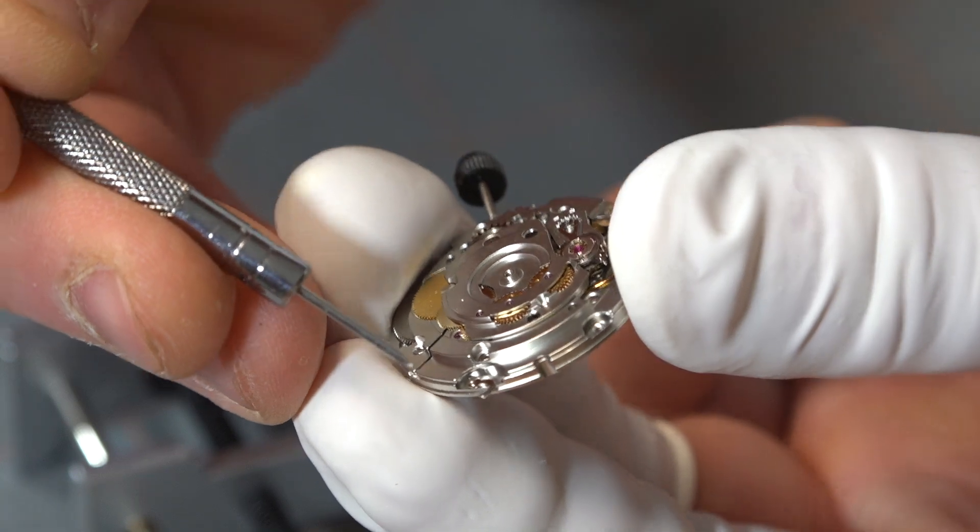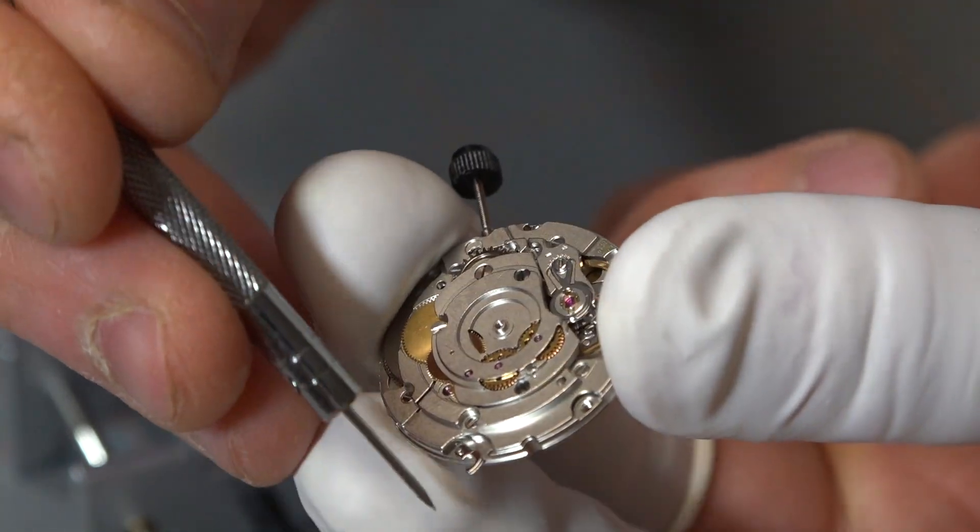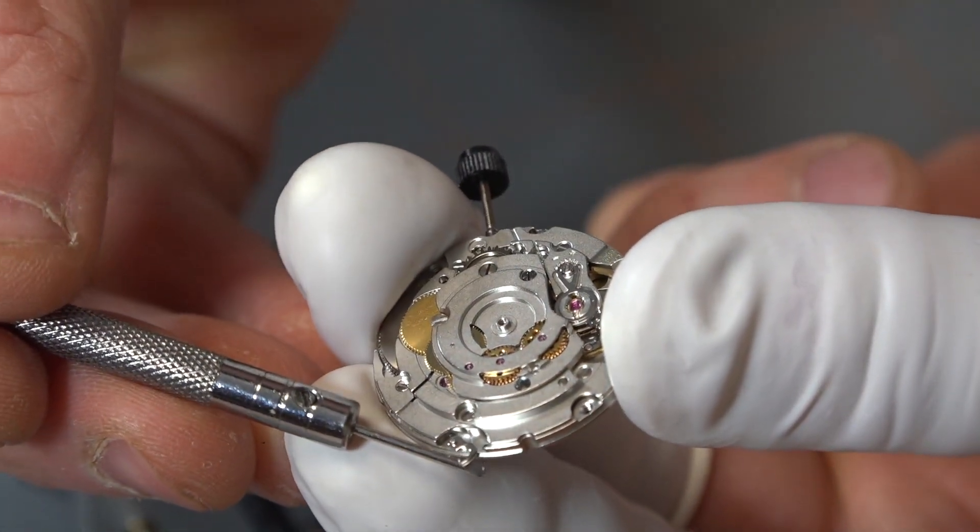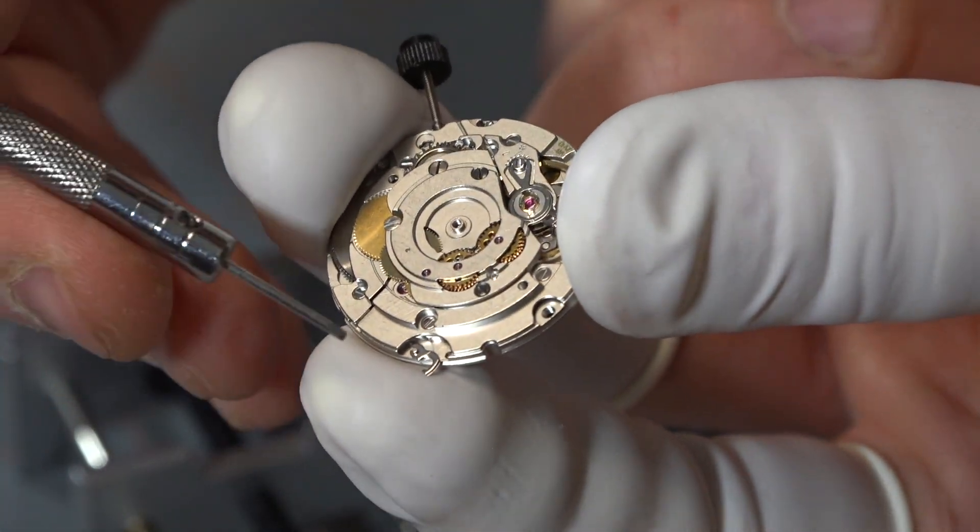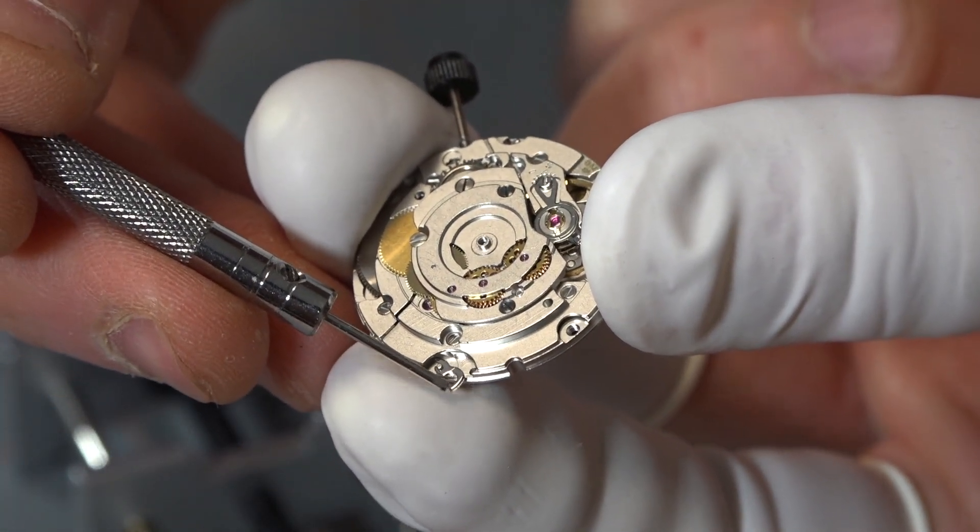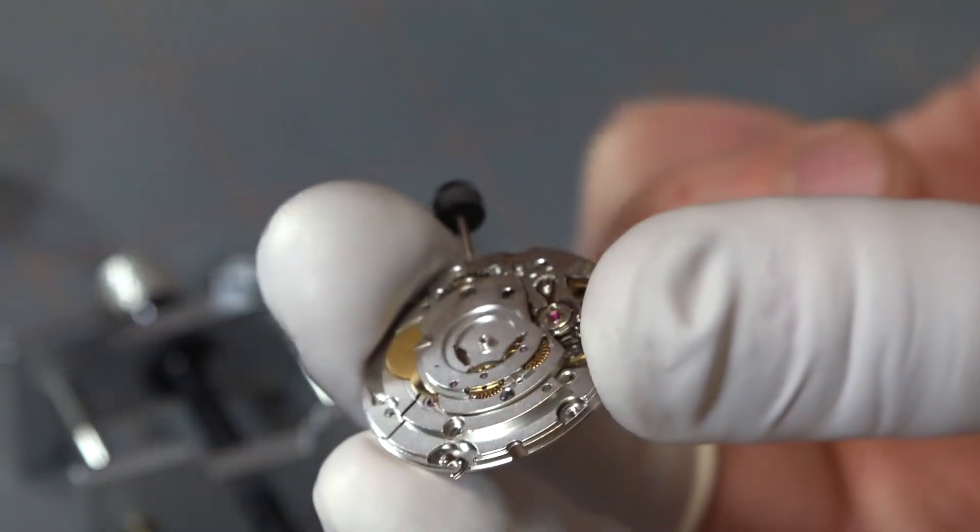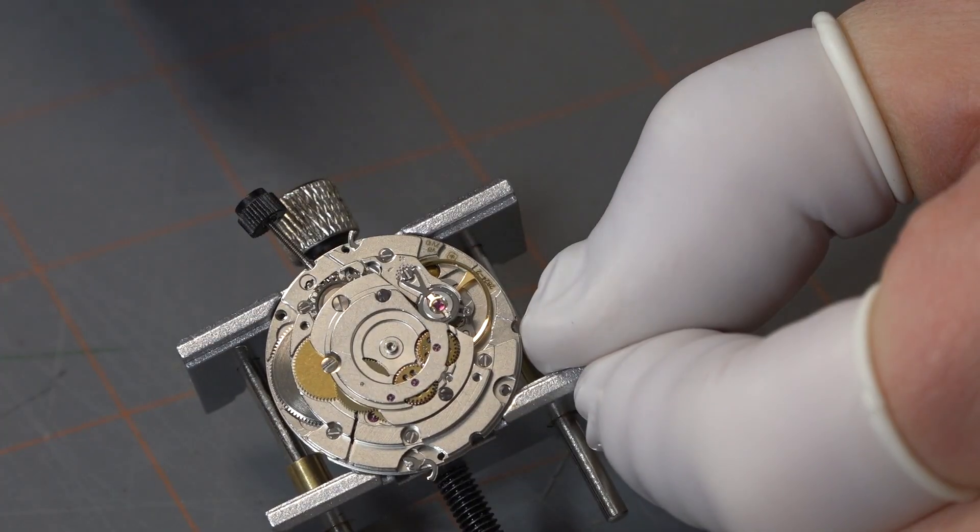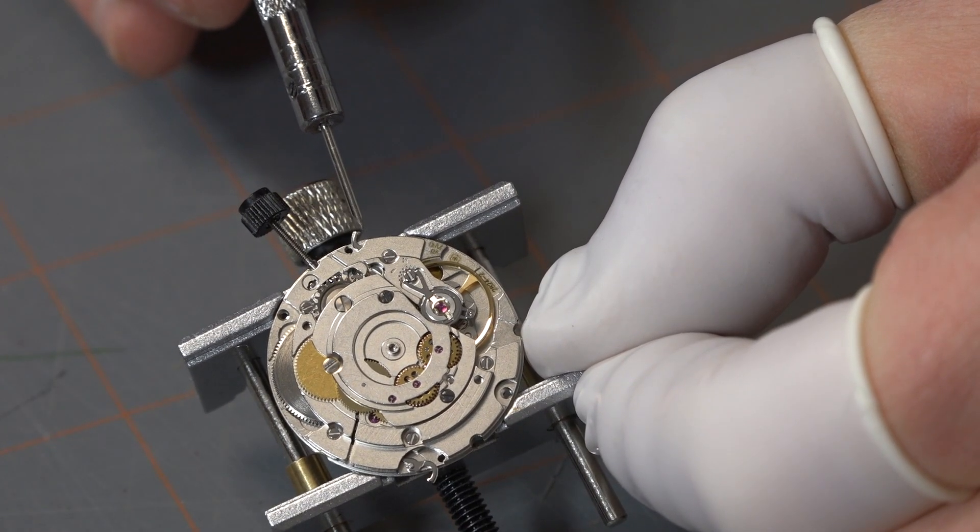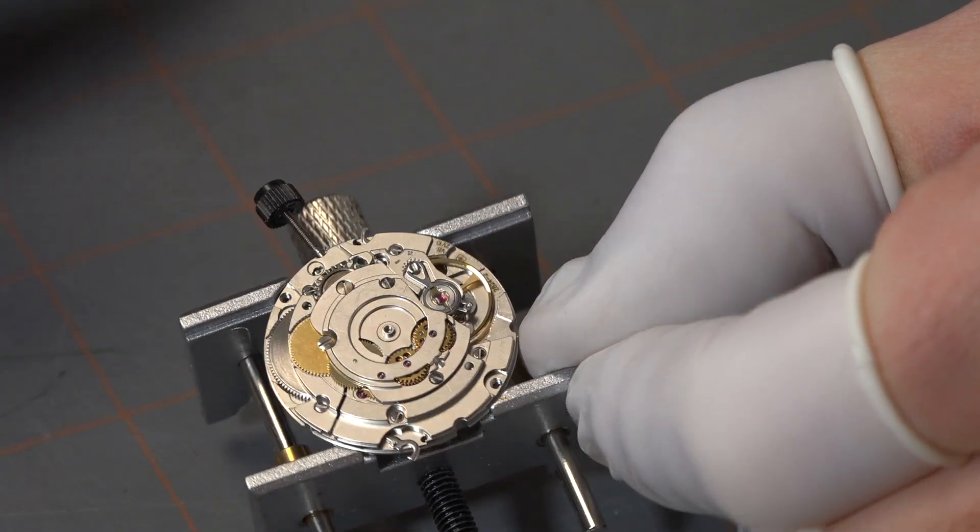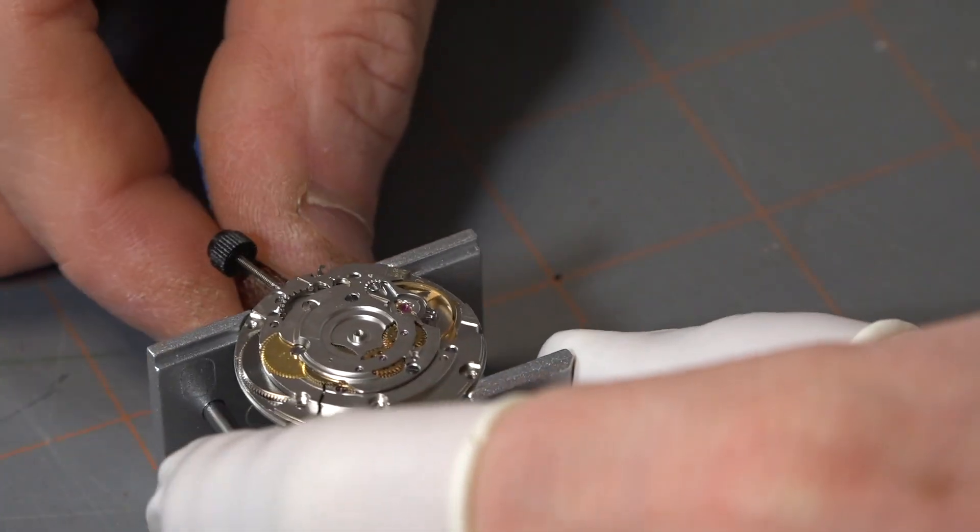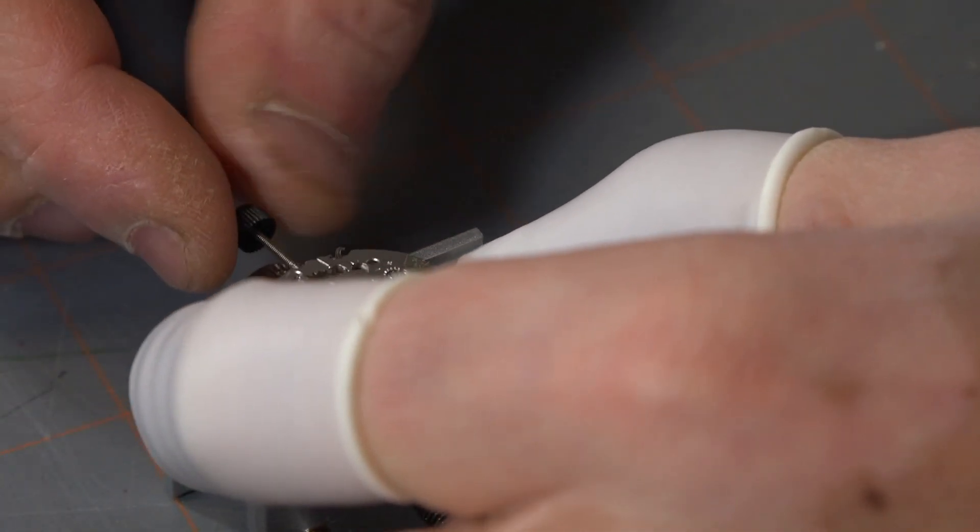This takes quite a bit of effort and you have to be very careful when prying these feet loose. There's one at approximately three o'clock and one at approximately nine o'clock. Once I have the dial feet clips exposed, I just flip the movement over.